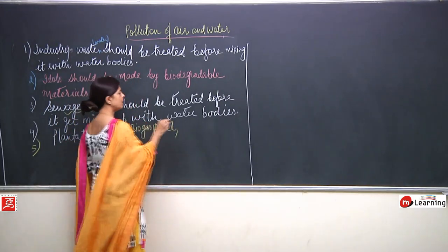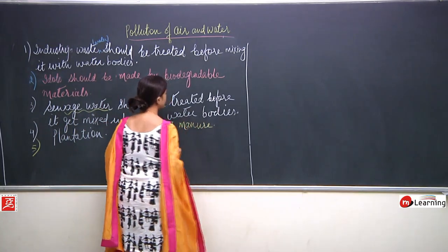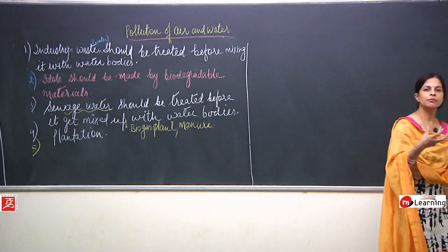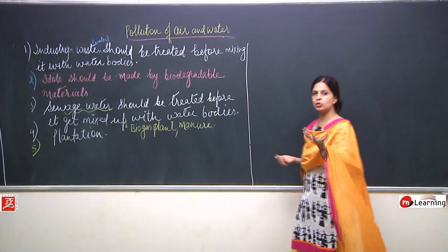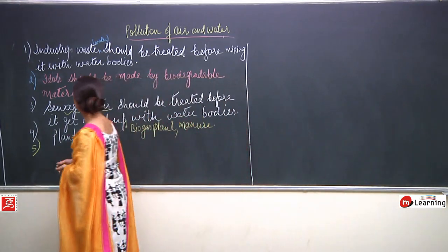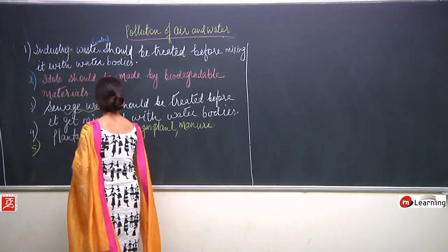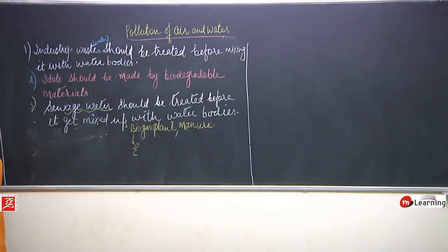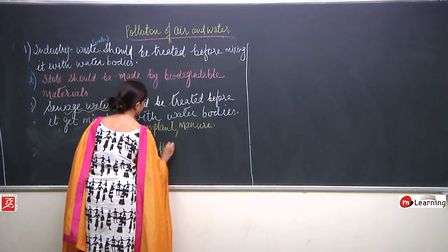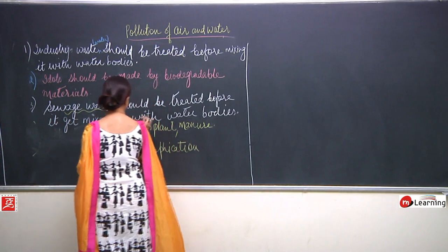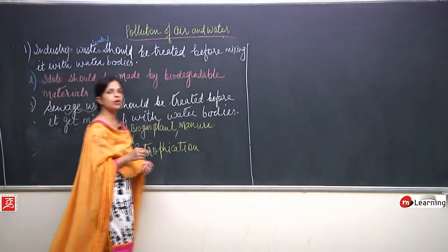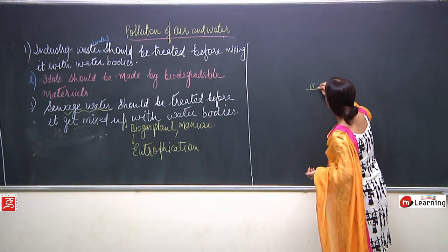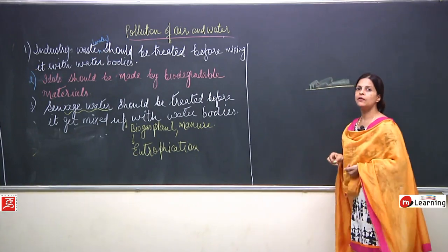One more very dangerous thing: when water containing certain material increases plant growth and gets released into water bodies, it gives rise to eutrophication. Eutrophication means that on the surface of the water, a large amount of algae grows and the water surface gets covered with algae.